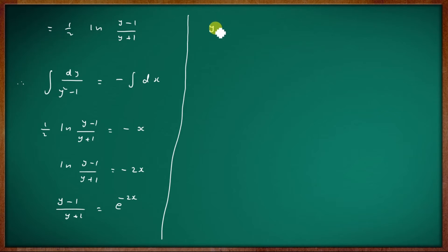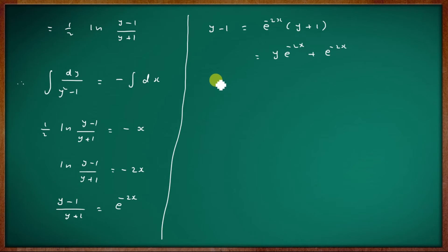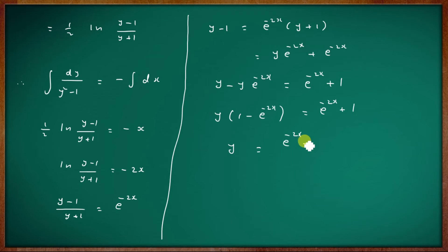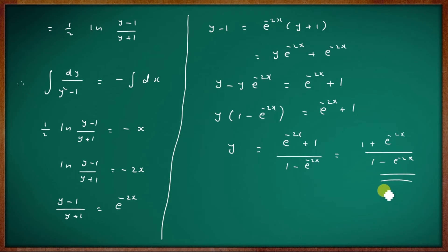Solving for y from (y-1)/(y+1) = e^(-2x): this gives the solution. Three steps are done for this problem.